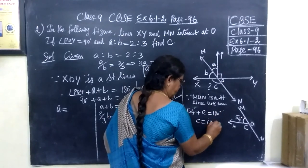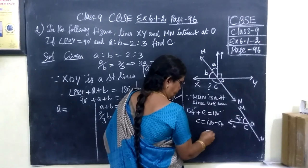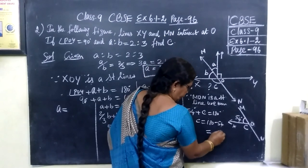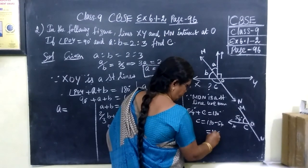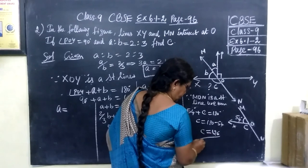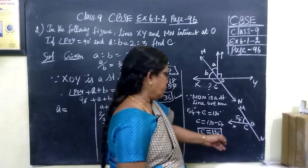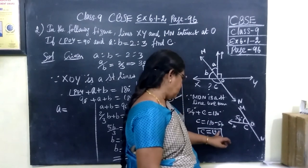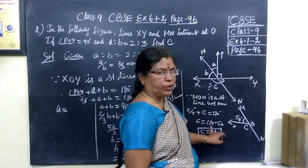Which implies C equals 180 minus 54. So 126. Before that, you verify the answer. Sum of the angles 180 means 126 plus 54. So C equals 126.